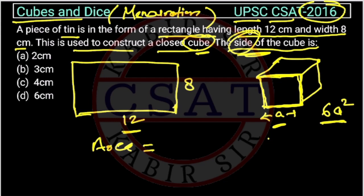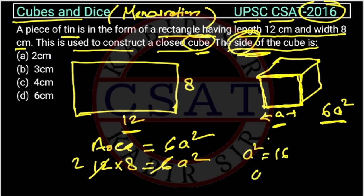So, the area of this will be equal to 6a square. Area is normally b into h. So, this is 12 into 8 is equal to 6a square. This will cut this. So, a square is equal to 16. So, a is 4.